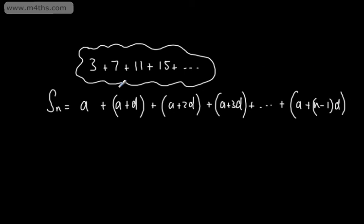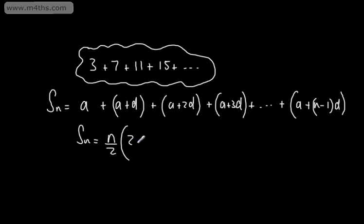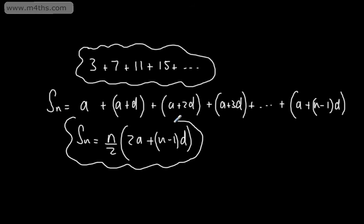Clearly there must be a more efficient way of doing this. The way in which we sum an arithmetic series with first term a and common difference d is: the sum of n terms, S_n, is n over 2 times (2a plus (n minus 1) multiplied by d). This is given in the formula book.